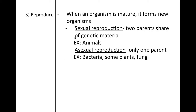There are two different kinds of reproduction: sexual reproduction and asexual reproduction. With sexual reproduction, two parents share genetic material. For example, with animals like humans, there is a female and a male, and they share their genetic material to make a child that is a mixture of both of their genes.